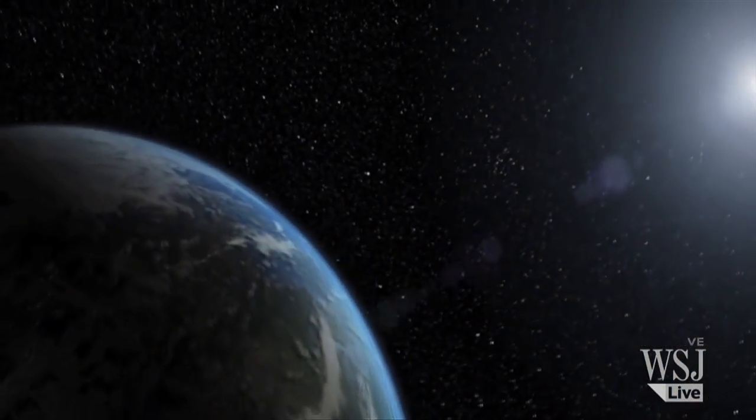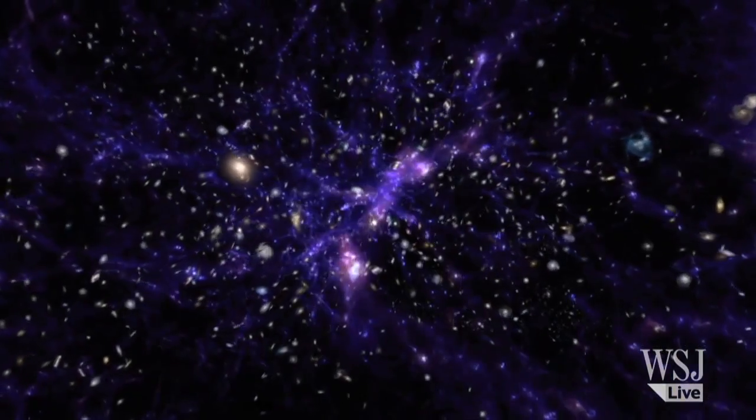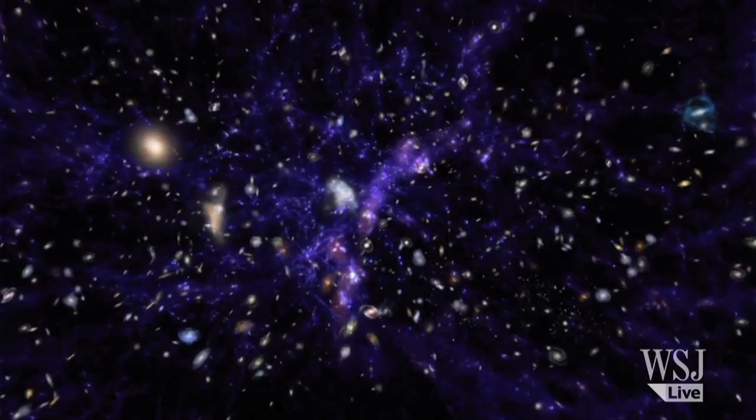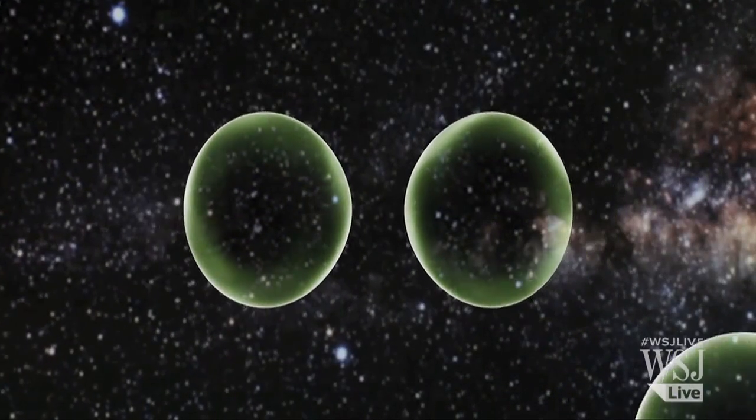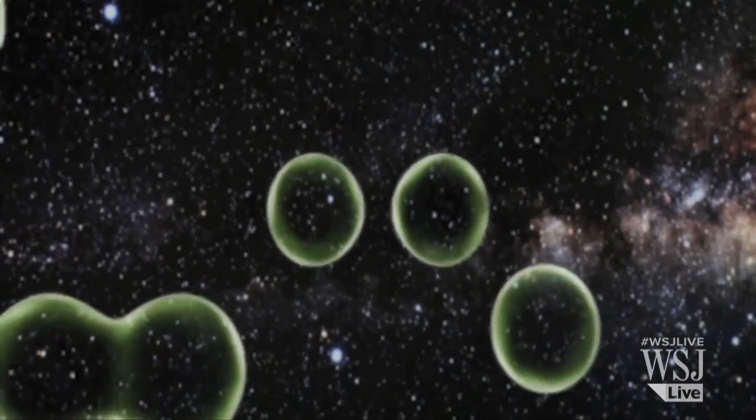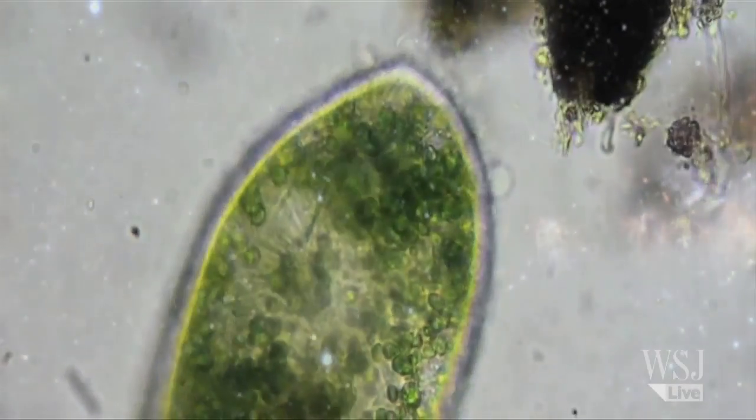The extraterrestrial life that NASA scientists expect to find may be unlike what most people imagine alien life to look like. Ms. Stofan clarified that she believes the life forms they'll discover are likely to be tiny on the scale of small microbes.